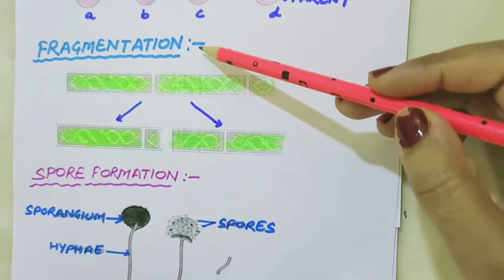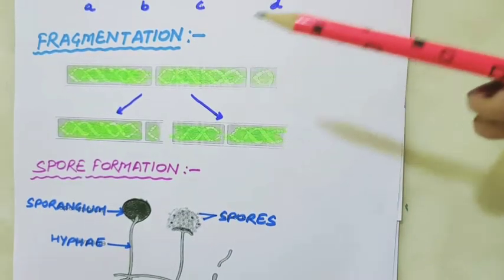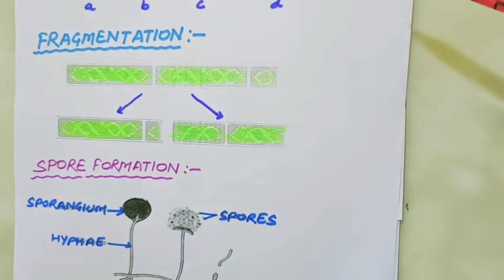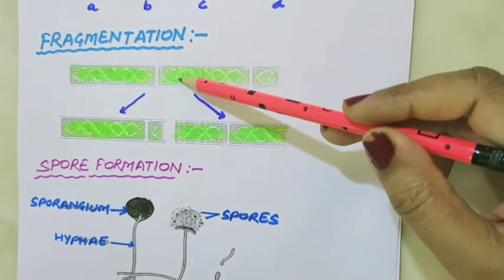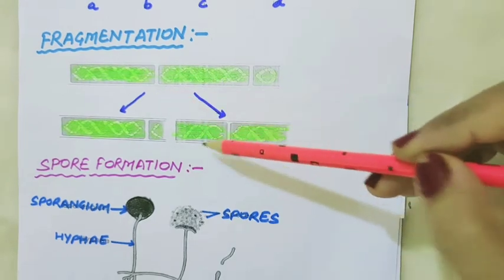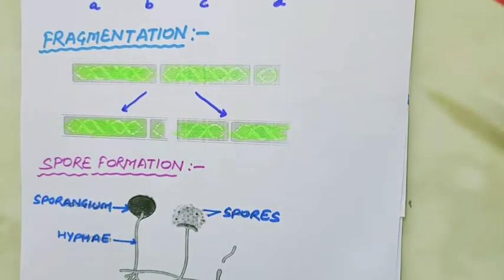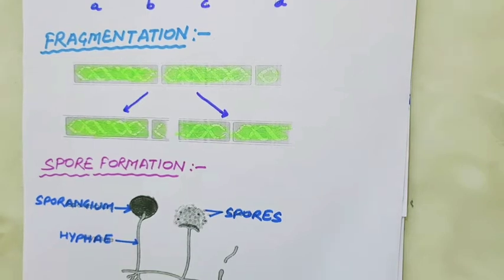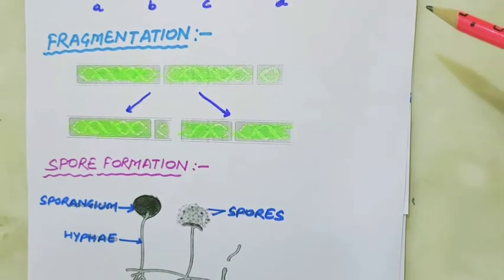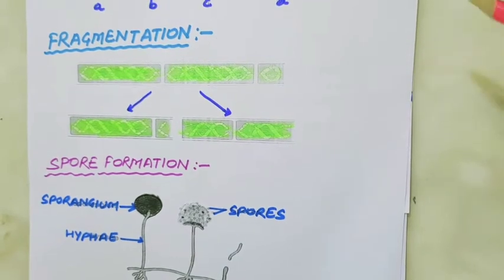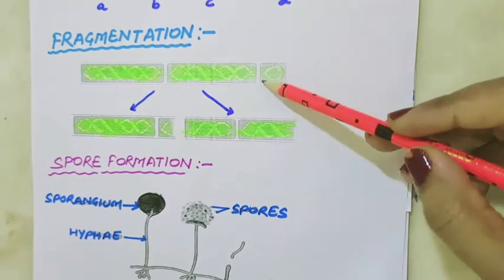Another type of asexual reproduction is fragmentation. Some algae like spirogyra, which are present in water bodies, reproduce by fragmentation. The body of the parent breaks into smaller pieces called fragments, and each fragment grows into a new plant. Fragmentation of the parent body occurs when they are matured. If water and nutrients are available, the algae will grow and multiply rapidly by fragmentation.